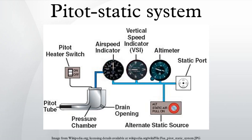The pitot pressure is a measure of ram air pressure, which under ideal conditions is equal to stagnation pressure, also called total pressure. The pitot tube is most often located on the wing or front section of an aircraft, facing forward, where its opening is exposed to the relative wind. By situating the pitot tube in such a location, the ram air pressure is more accurately measured since it will be less distorted by the aircraft's structure.